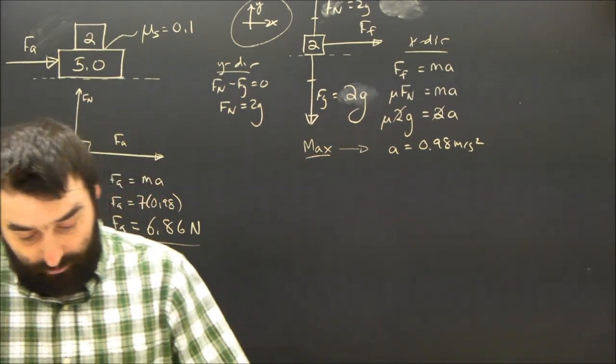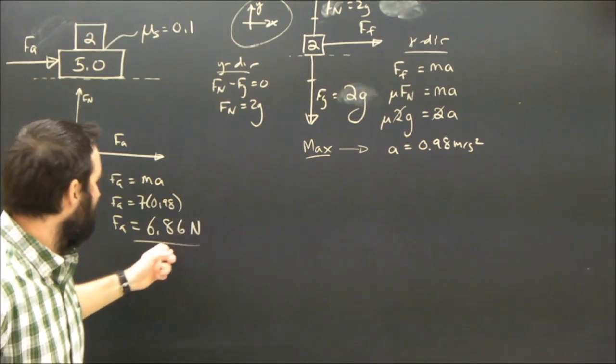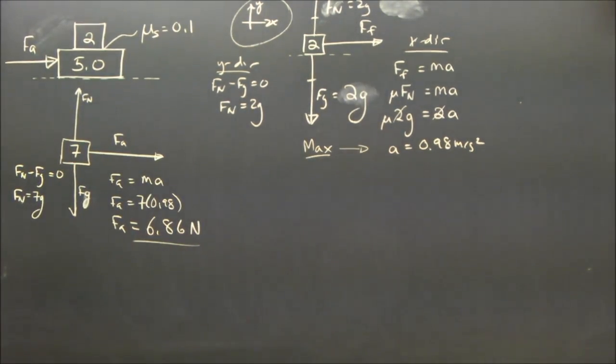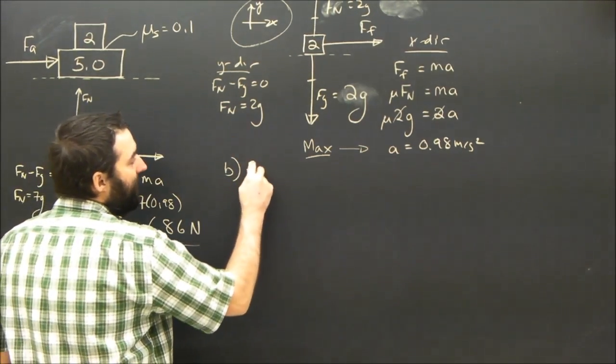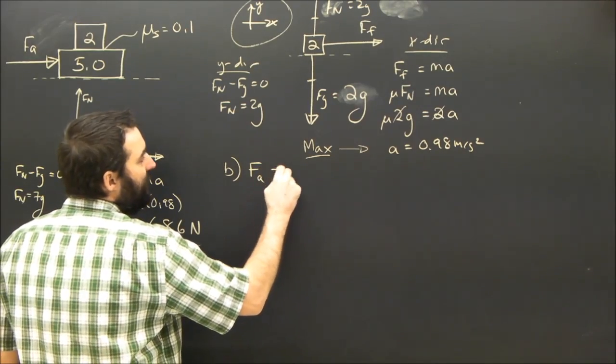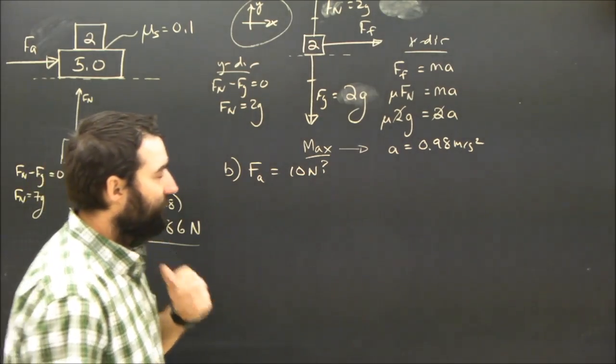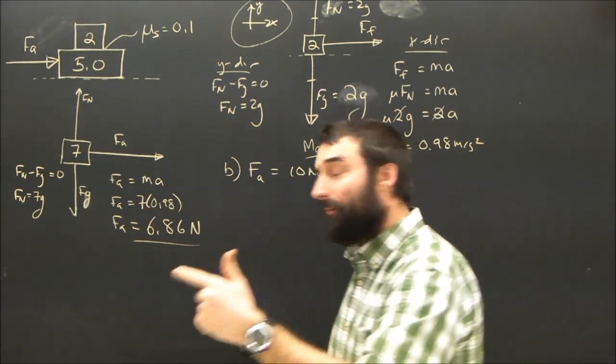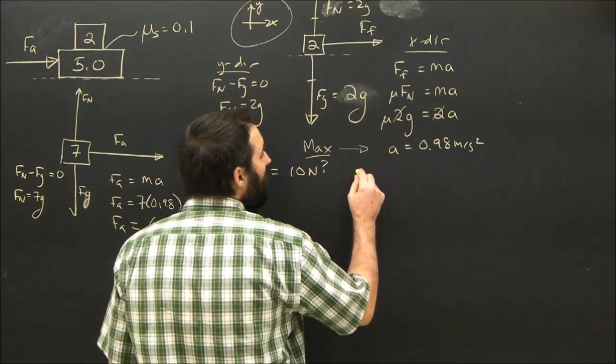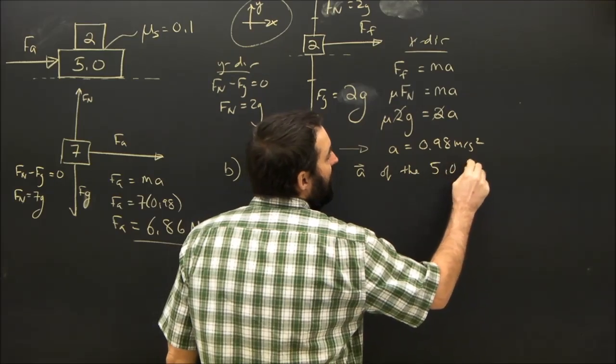Now, that's only part A. The question is, what's the maximum applied force before this thing causes the top guy to slip back? But wouldn't it be interesting if there was a part B? And part B, which of course there is, is what if the applied force is 10 newtons? Well, what if? Well, what's the actual question? The question is, if we apply a force of 10 newtons, then what would be the acceleration of the 5 kilogram object?